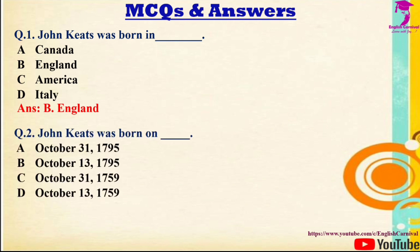Question 2: John Keats was born on — Options: A) October 31, 1795, B) October 13, 1795, C) October 31, 1759, D) October 13, 1759. Correct answer is A — he was born on 31st October 1795.